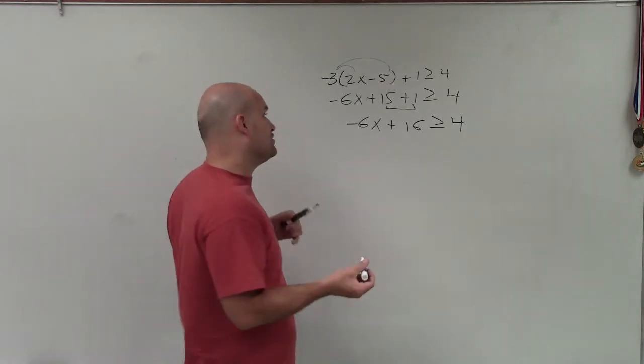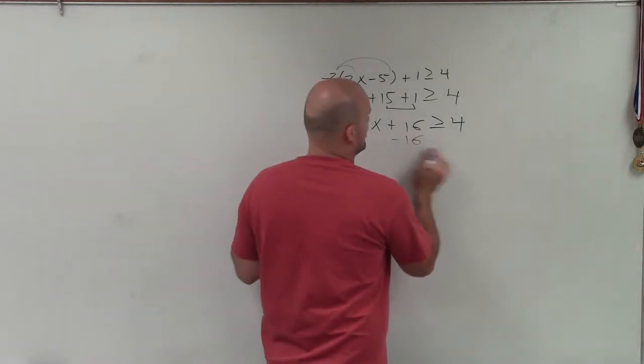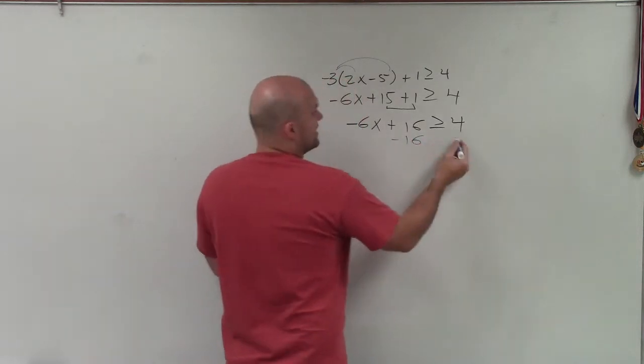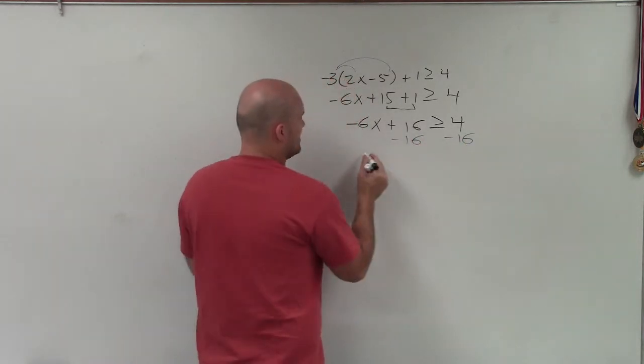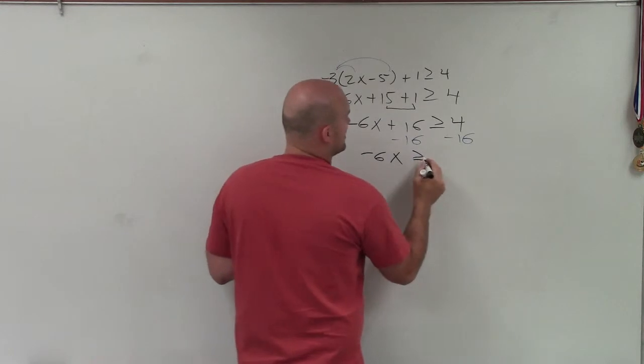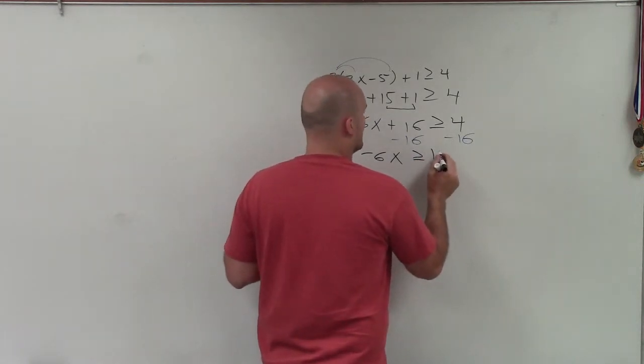So now I need to undo addition and subtraction first. So I undo addition of 16. I subtract 16 on both sides, and I get negative 6x is greater than or equal to negative 12.